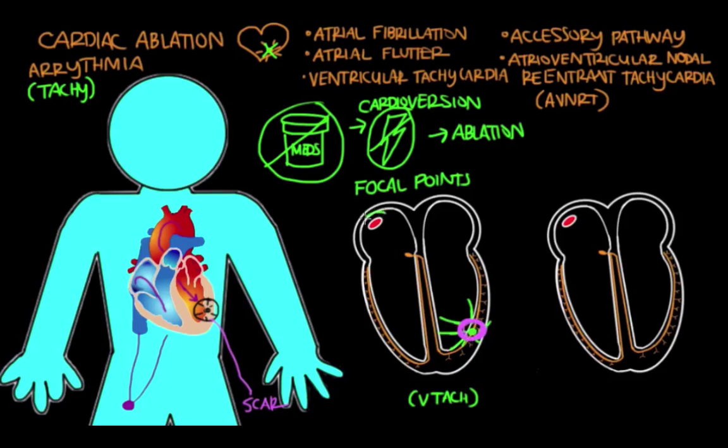The cardiologists are very careful to stay clear of structures that are critical to conduction, such as the SA node and the AV node. They stay clear of all these critical structures and only take care of the problem areas that are causing the arrhythmias.